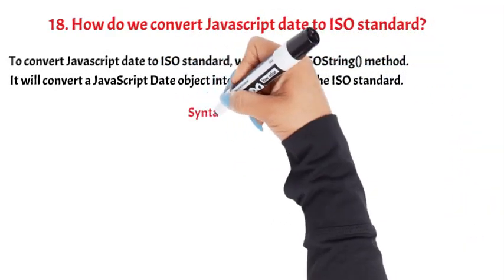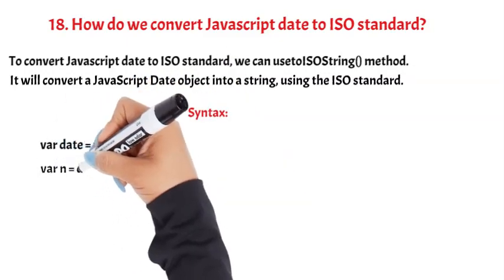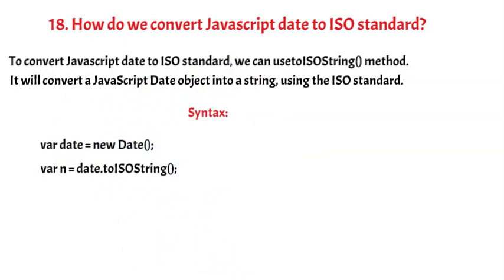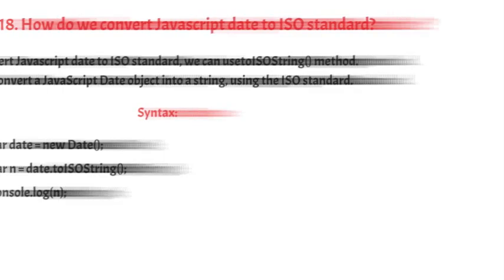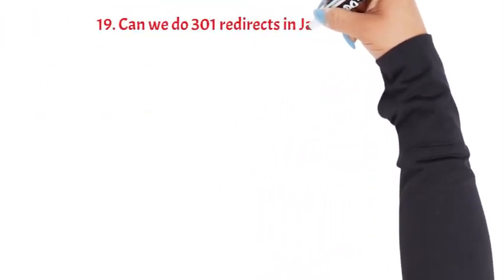Syntax: var date = new Date(); var iso = date.toISOString(); console.log(iso); Question 19: Can we do 301 redirects in JavaScript?